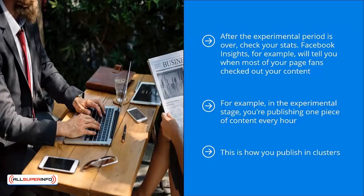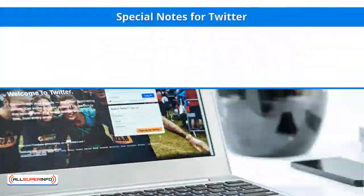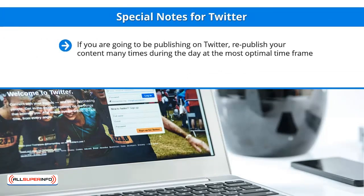Forget time blocks outside of that time frame. This way, you maximize your chances of the right eyeballs seeing your content. Special notes for Twitter: if you're going to be publishing on Twitter, republish your content many times during the day at the most optimal time frame. Facebook Insights already told you that your content is being viewed within a specific time frame — chances are your Twitter fans have the same social media viewing habits. Stick to that time frame. Here's the secret: set up your automated content publishing tools to tweet out your best content many times during that time frame, but you also have to rotate different hashtags. This way, you can reach different people looking for hashtags related to different sub-segments of your niche.